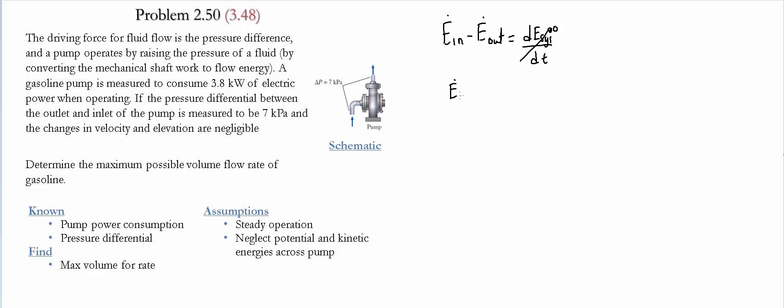Therefore, the rate of energy in equals the rate of energy leaving the system. The energy going into the system equals the electrical power plus the rate of flow energy into the system. The energy leaving is the rate of flow energy leaving the system.